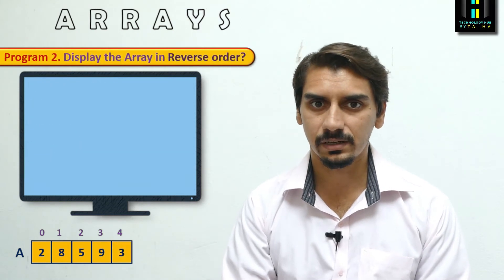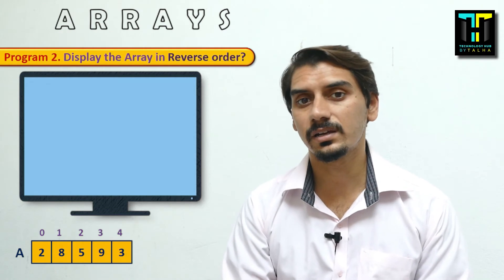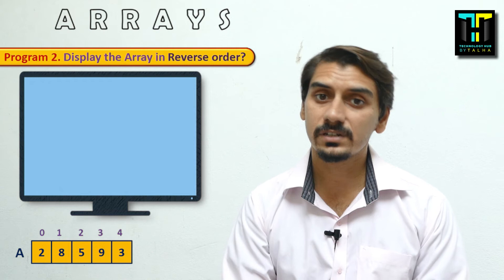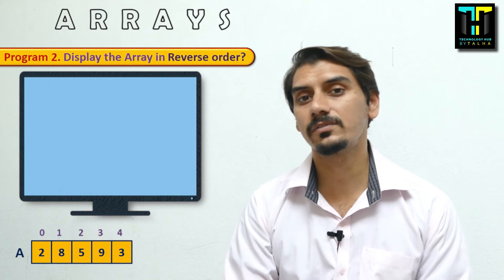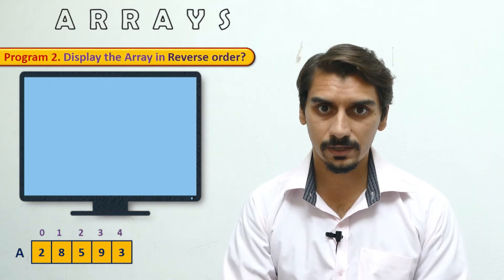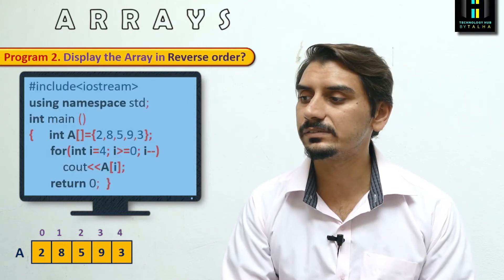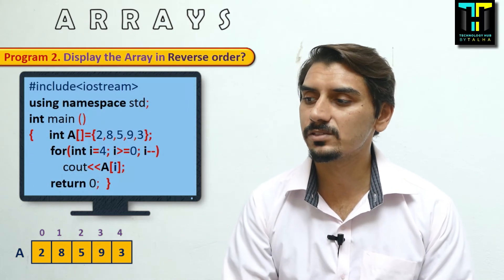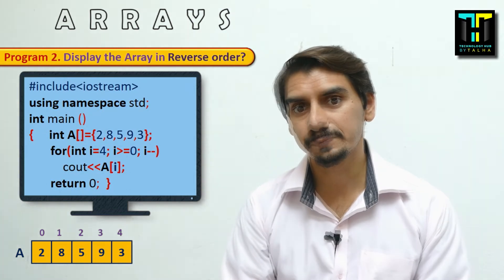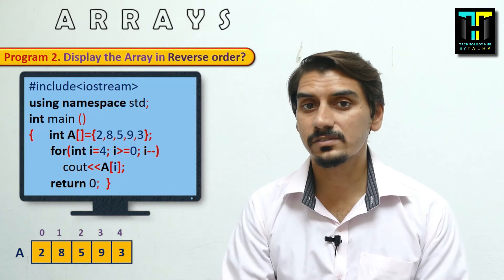If we want to display the array in reverse order — for example, if we have 1, 2, 3, and 4 in the array, after reversing we get 4, 3, 2, and 1. So let's apply this operation on the same array using a modified code.